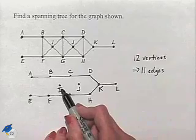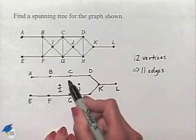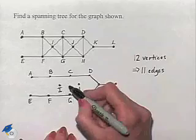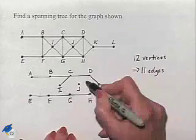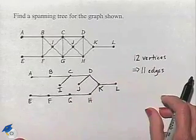So all we really need to do is figure out how to connect to I and J. And we have a number of different routes, but if we decide to connect I to C and J to D, this would be one of the spanning trees.